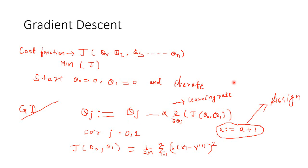So how do we overcome this problem? It is practically impossible to keep on changing the theta 0 and theta 1 values an infinite number of times to find out for what set of values the cost function is minimum. For that, the gradient descent algorithm comes to the rescue. We can use this algorithm to find out the values in a minimum number of steps.